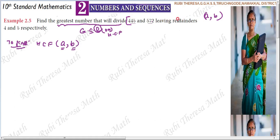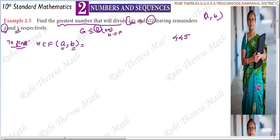What will it leave? It leaves a remainder of 4. So 445 leaves a remainder of 4, which means 445 minus 4 gives us 441.